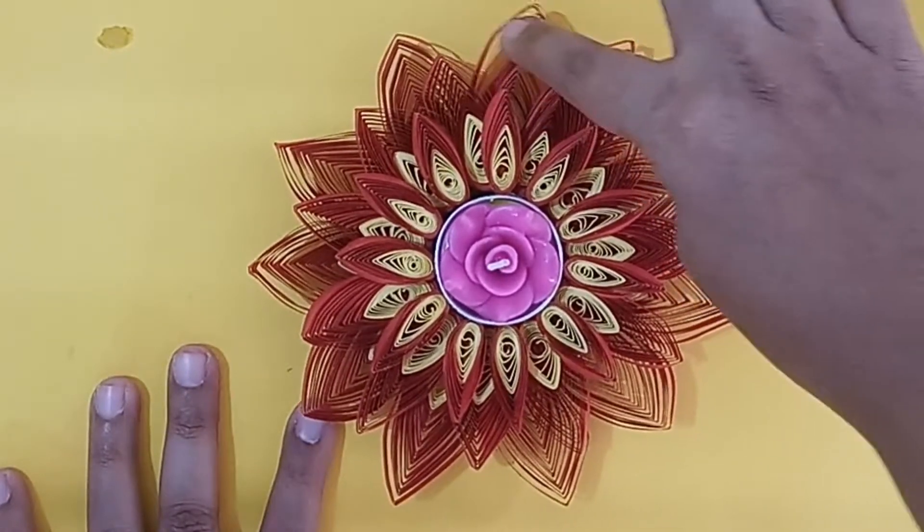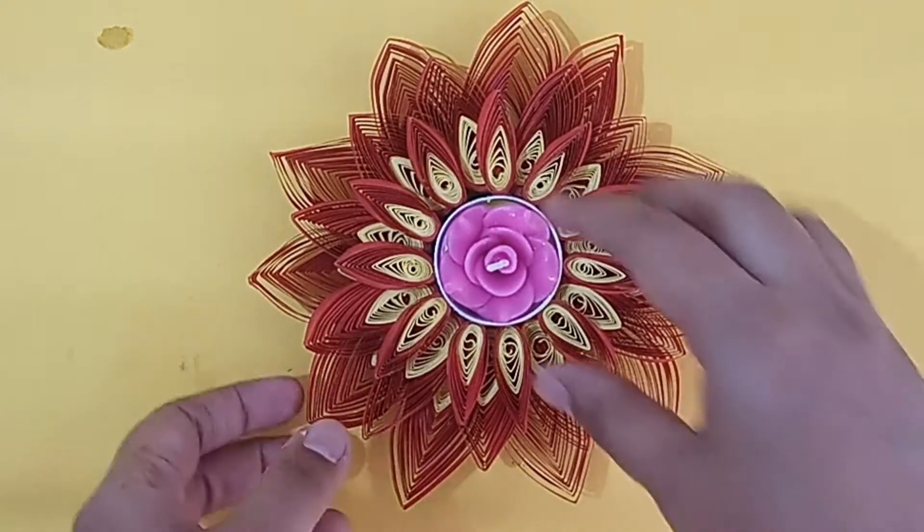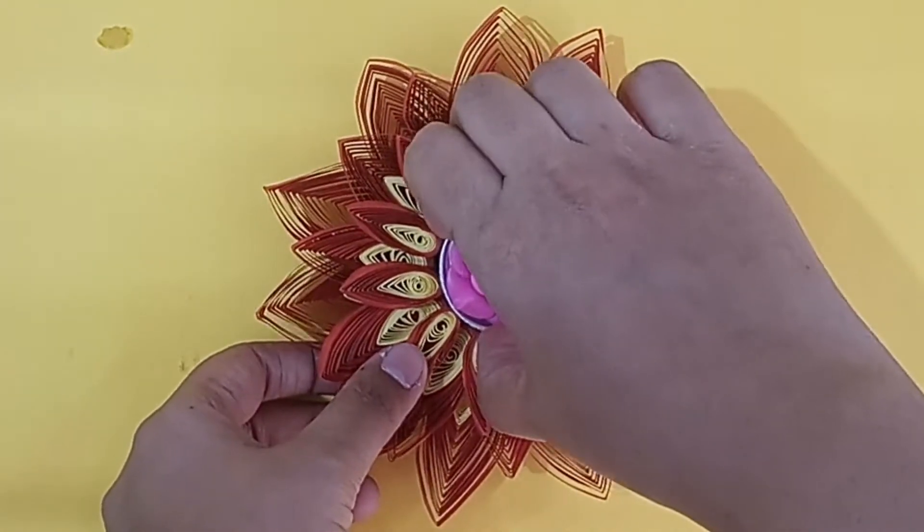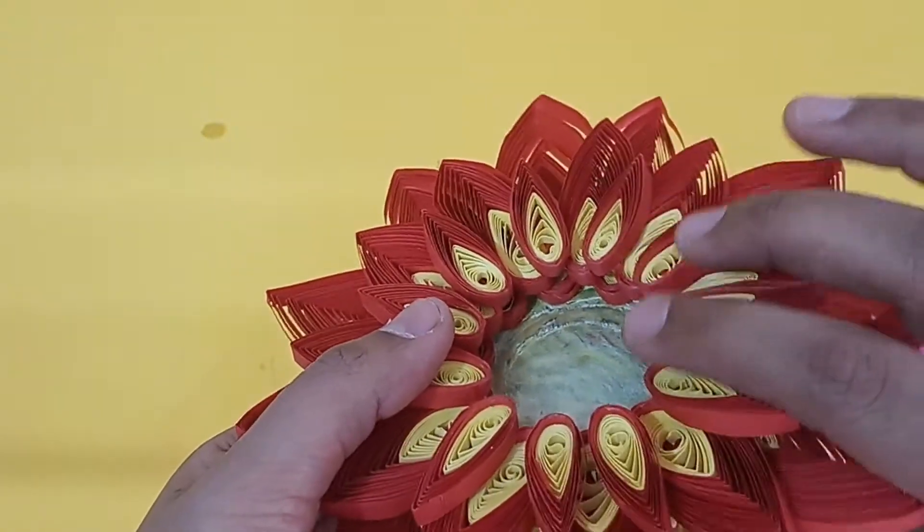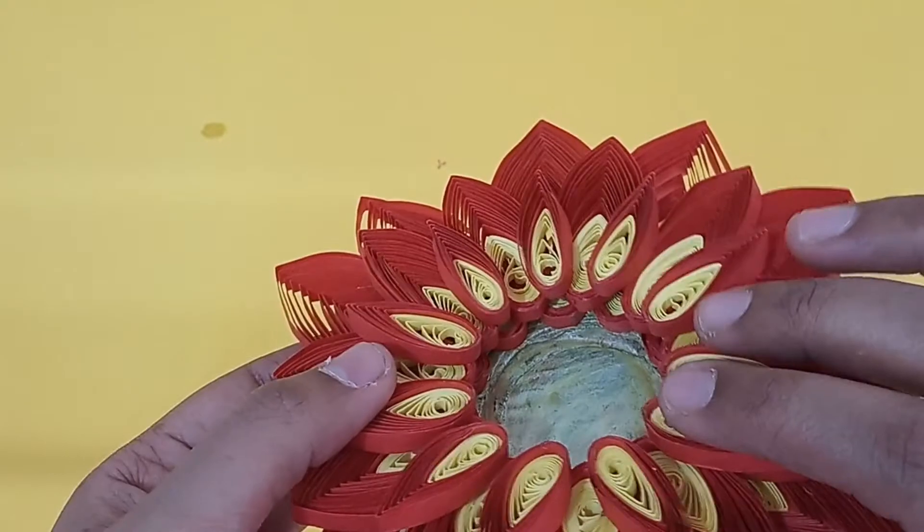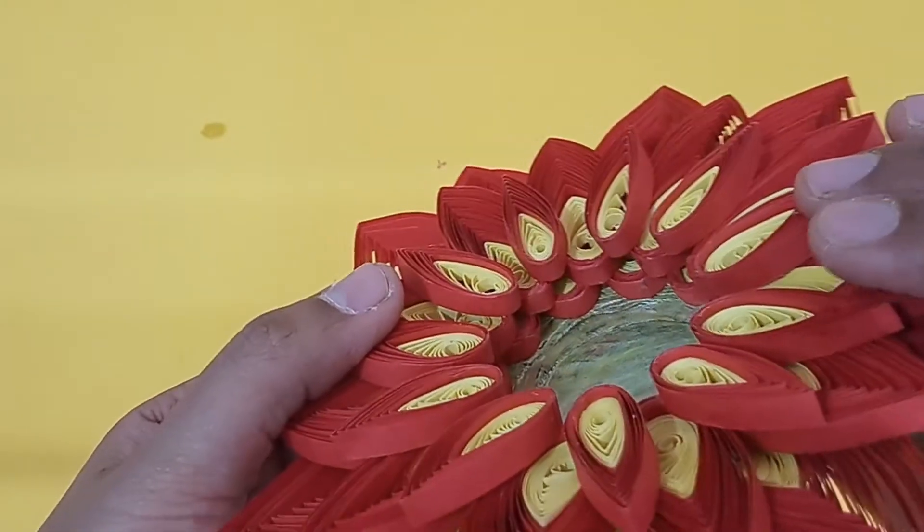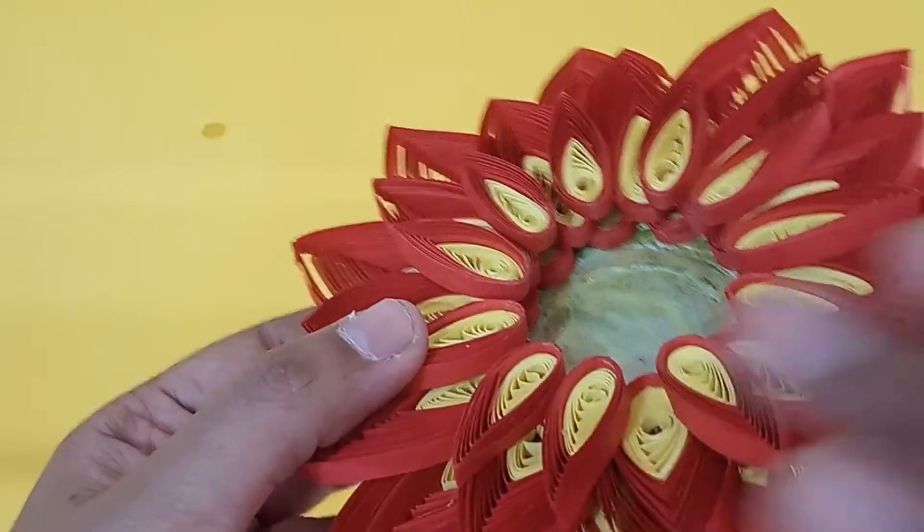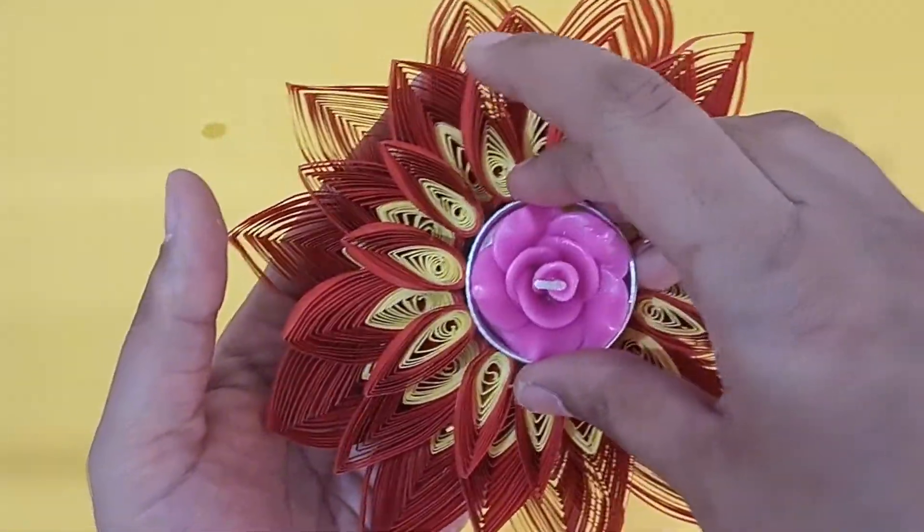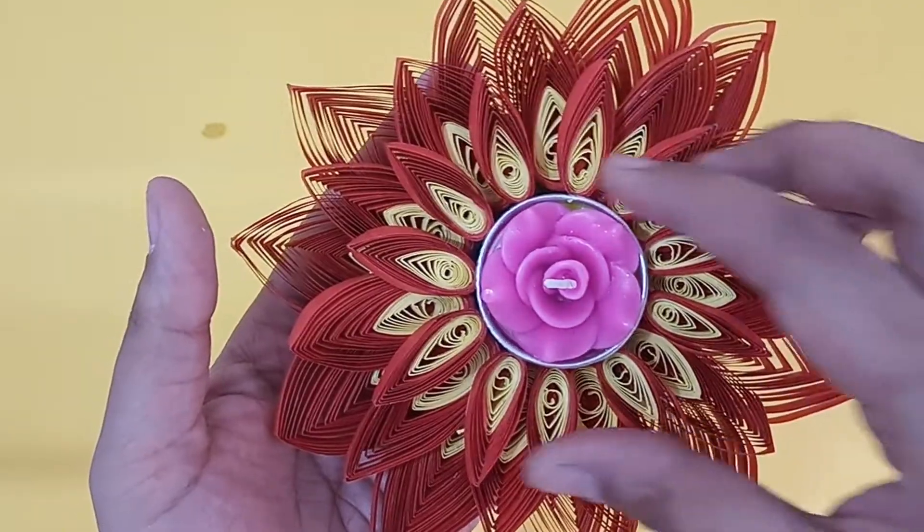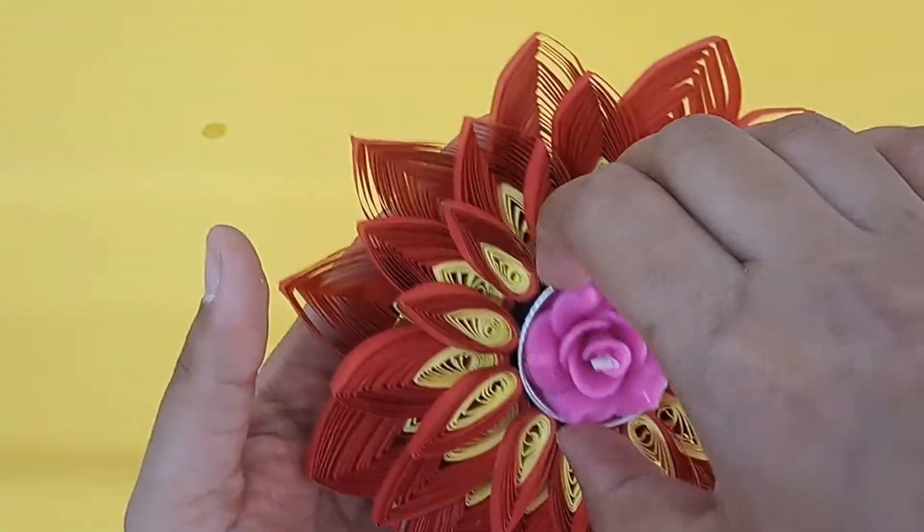In this way, you can make different petals and stick them together. I have just kept space for the tea light candle in the middle and stuck the petals around it. Lower level has the larger petals and uppermost level has the small petals.